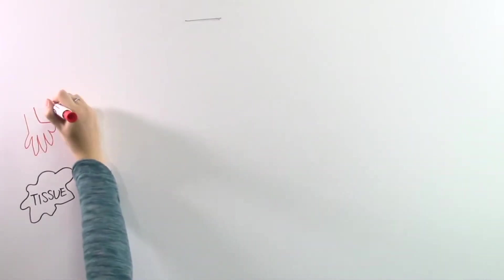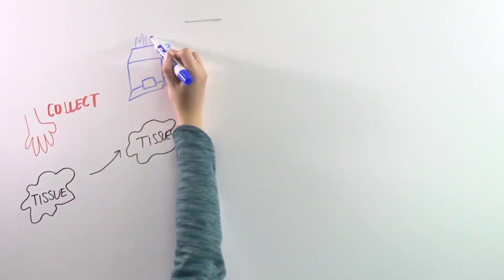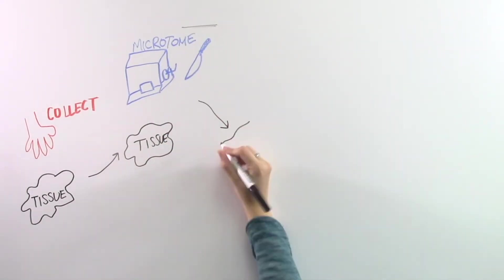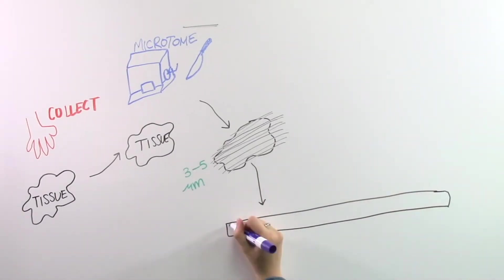The first step is preparatory. The tissue has to be collected, placed on a microtome that functions as a knife to cut the tissues into three to five micrometer sections, and then a section is placed on a slide.